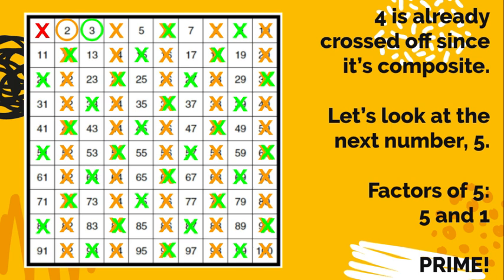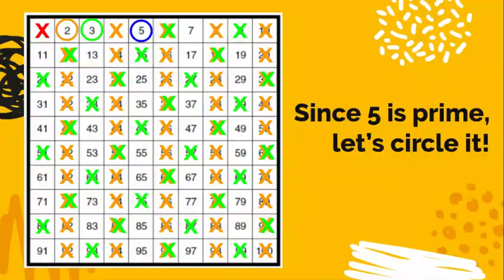Factors of 5. 5 and 1 only. So that makes 5 prime. So let's pick a new color. I chose blue and circle it. It's a prime number. So far we have 3 prime numbers: 2, 3, and 5.